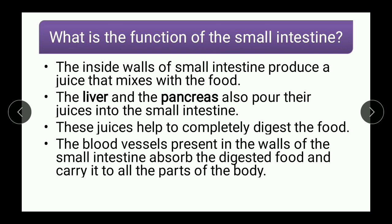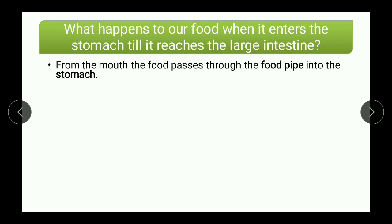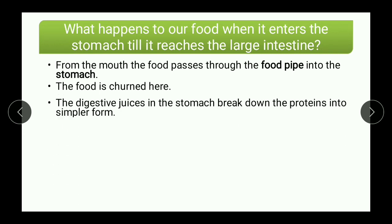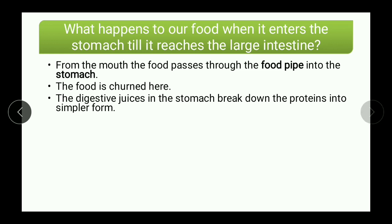Next question reads: what happens to our food when it enters the stomach till it reaches the large intestine? The answer is: from the mouth, the food passes through the food pipe into the stomach. The food is churned here, and the digestive juices in the stomach break down the proteins into simpler form.